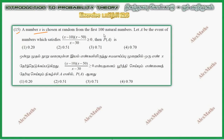The number X is chosen at random from the first 100 natural numbers. Let A be the event that the number satisfies the equation. We need to find P(A) when the inequality is satisfied.